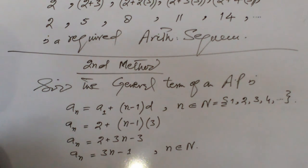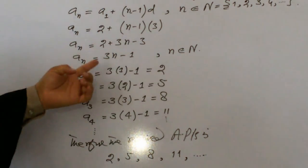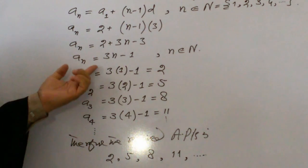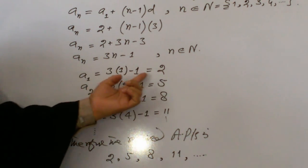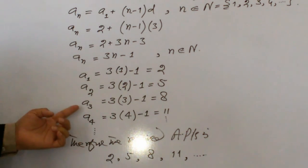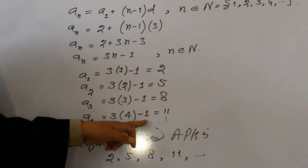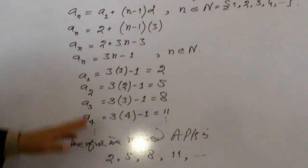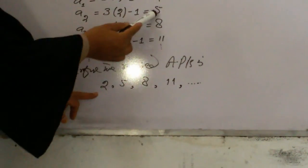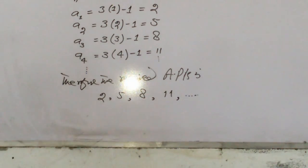This is the second method for calculation. First we calculate the general function for the required sequence. Then: A1 equals 3 times 1 minus 1 equals 2; A2 equals 3 times 2 minus 1 equals 5; A3 equals 3 times 3 minus 1 equals 8; A4 equals 3 times 4 minus 1 equals 11, and so on. The required sequence is 2, 5, 8, 11, which is the above sequence.